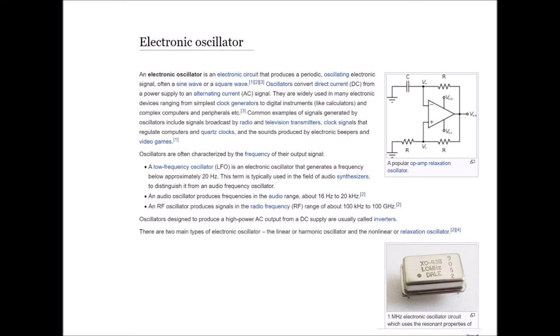Oscillators are often characterized by the frequency of their output signal. A low-frequency oscillator, LFO, is an electronic oscillator that generates a frequency approximately 20 Hz. This term is usually used in the field of audio synthesizers to distinguish it from an audio frequency oscillator. An audio oscillator produces frequencies in the audio range of about 16 Hz to 20 kHz. An RF oscillator produces signals in the radio frequency range of about 100 kHz to 100 GHz. Oscillators designed to produce a high-power AC output from a DC supply are usually called inverters. There are two main types of electronic oscillators: the linear, or harmonic oscillator, and the non-linear, or relaxation oscillator.